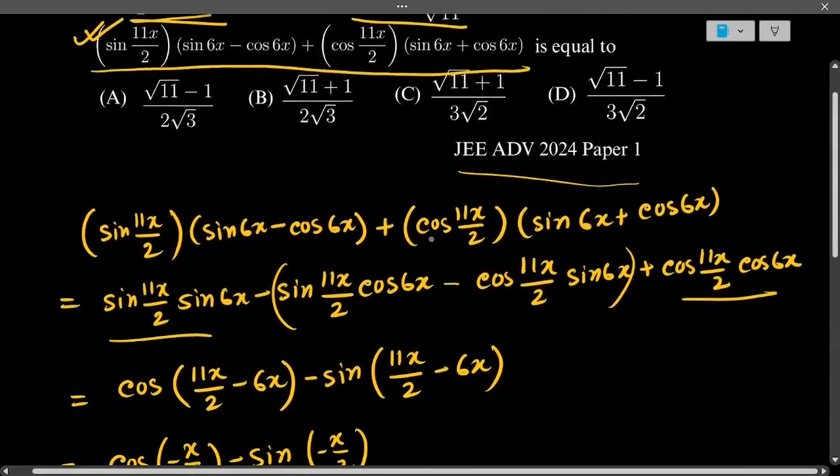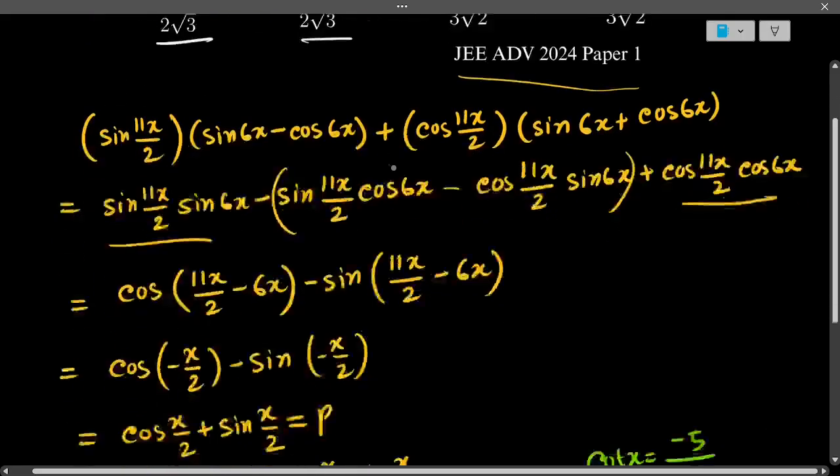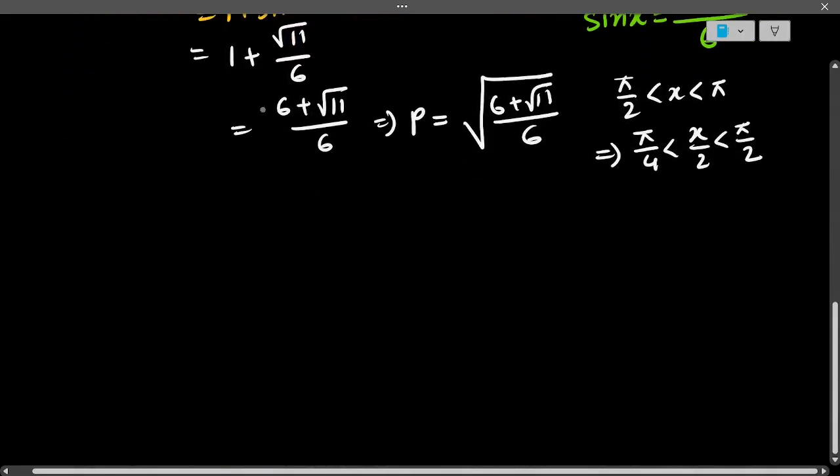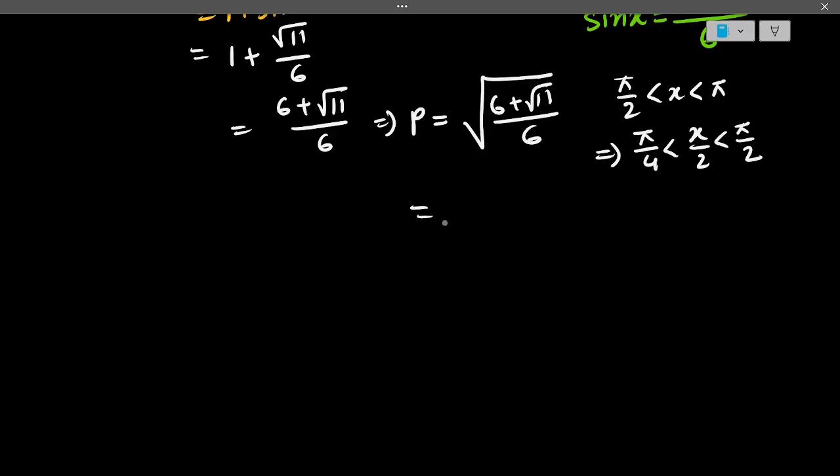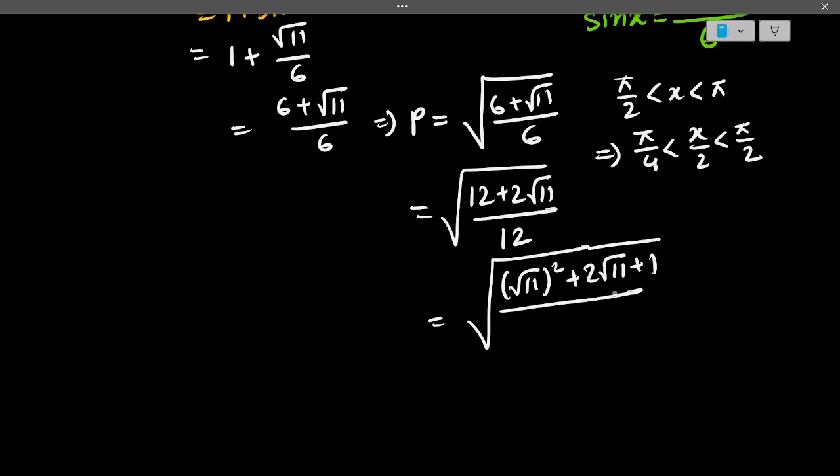Now check the options. There is 2√3. So now how will we get 2√3? We know that √12 = 2√3. So if we multiply numerator and denominator by 2, then in the numerator it will be 12 + 2√11, and in the denominator it will be 12. So this is the whole root of, we can write the numerator as (√11)² + 2√11 + 1 divided by 12.